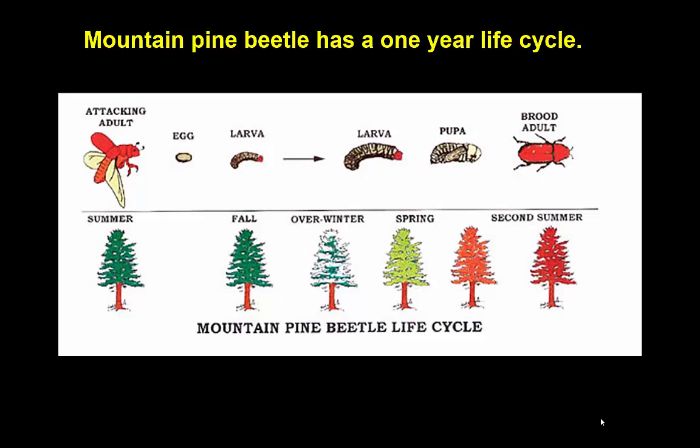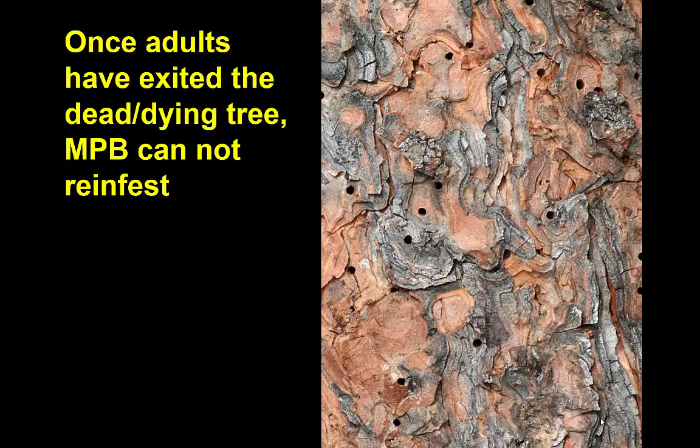Mountain pine beetle generally has a one-year life cycle. The overwintering stage is larvae within the tree; they continue to develop in spring, pupating usually in late spring. Adults come out in summer — mid to late July is typical, with some variation depending on location. It's not synchronized, so they will be coming out over a period of many weeks, but it is a one-year life cycle.